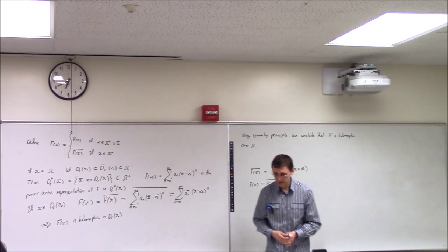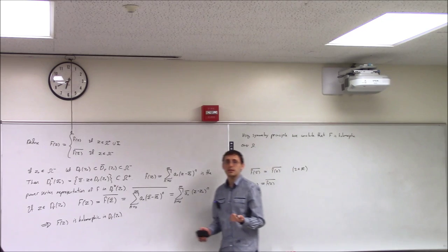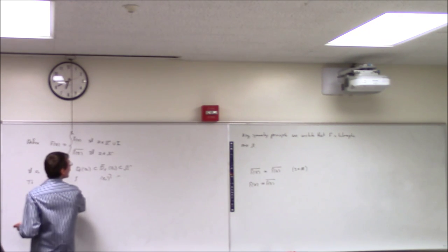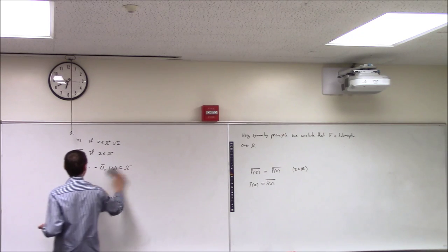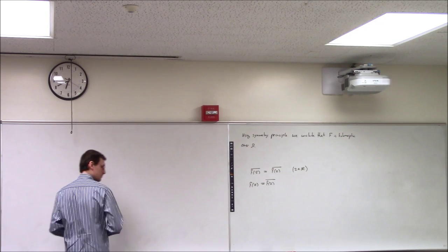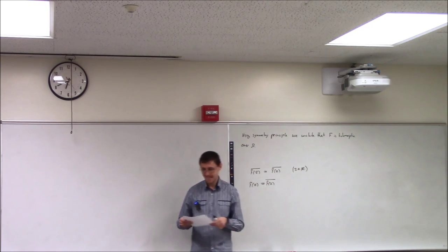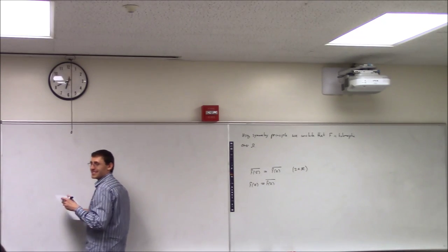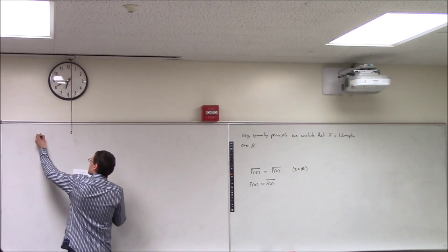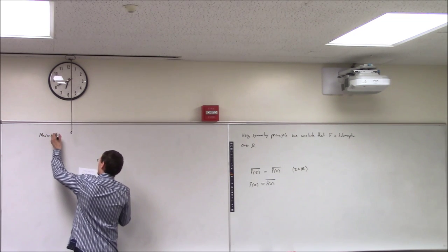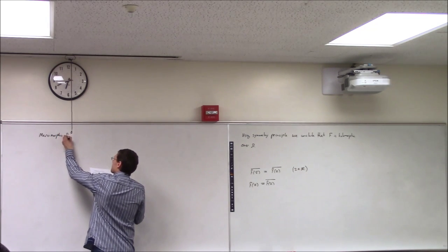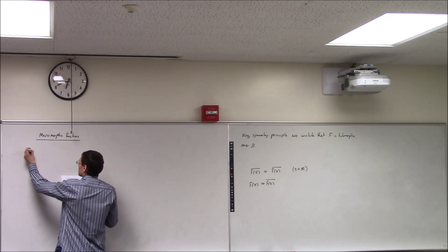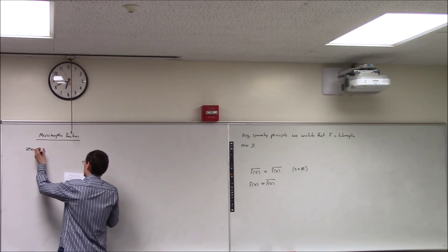Now we begin talking about meromorphic maps — we're in chapter three of the book. So, meromorphic functions. First, basically a bunch of definitions. We have: point singularity, which is a complex number z-zero such that f(z-zero) is not defined, but f is defined in some punctured neighborhood D(r, z-zero) minus {z-zero}.